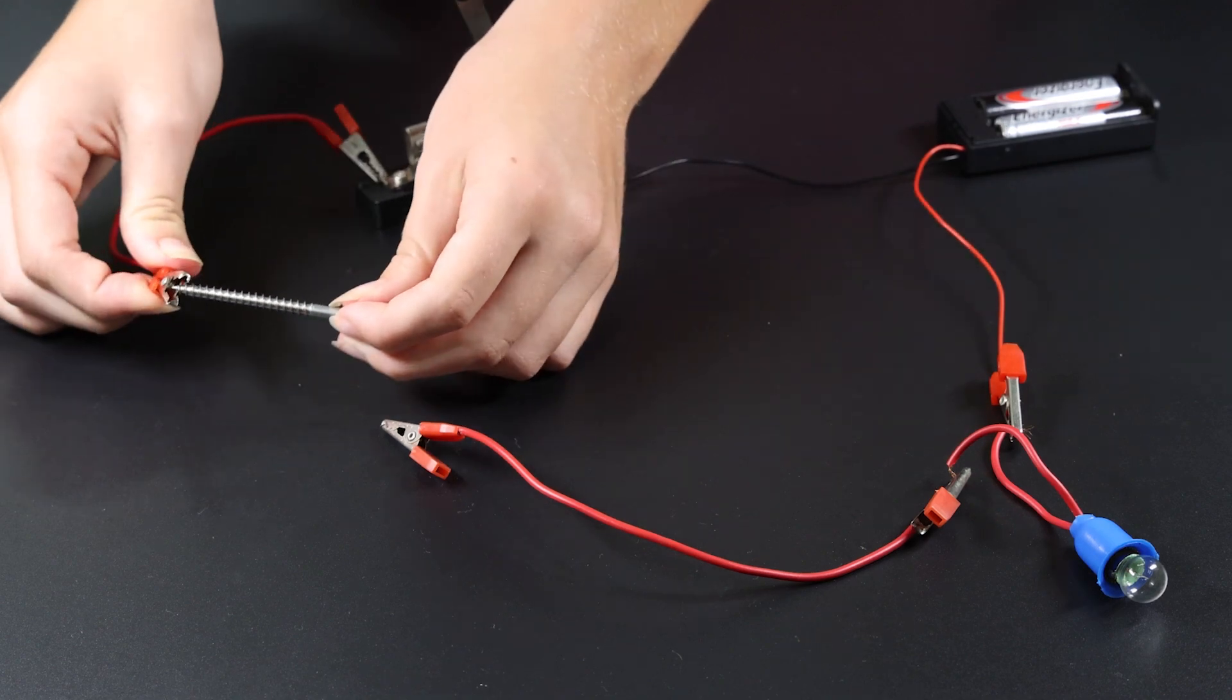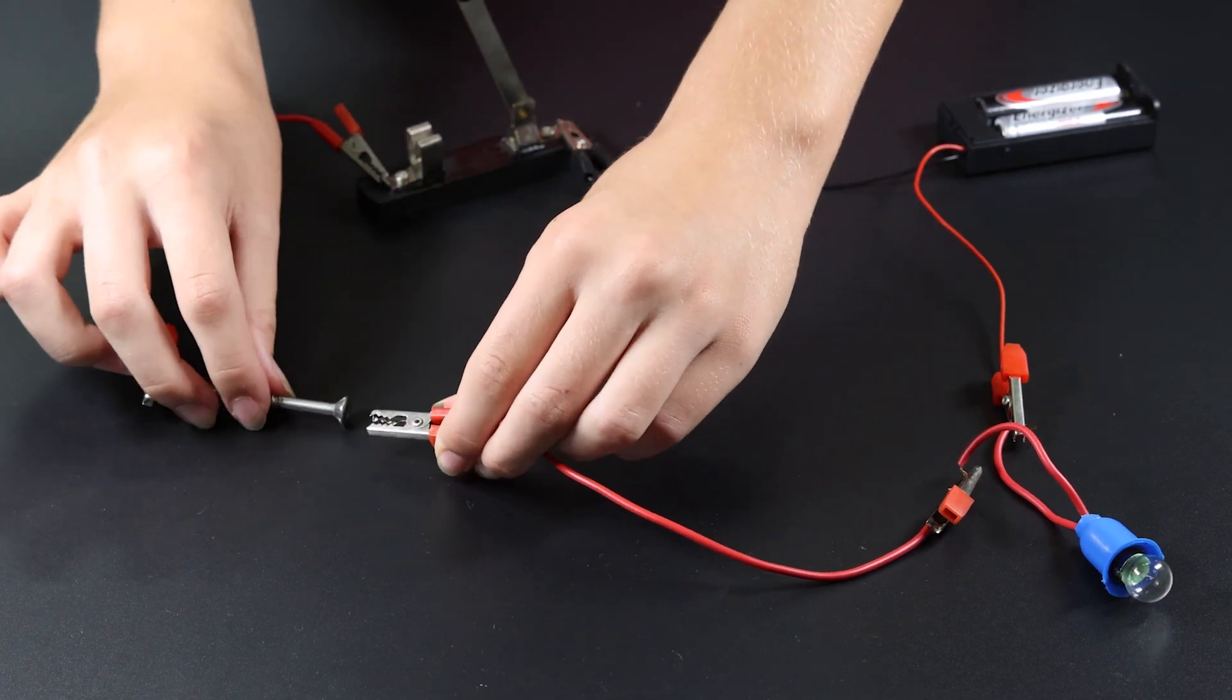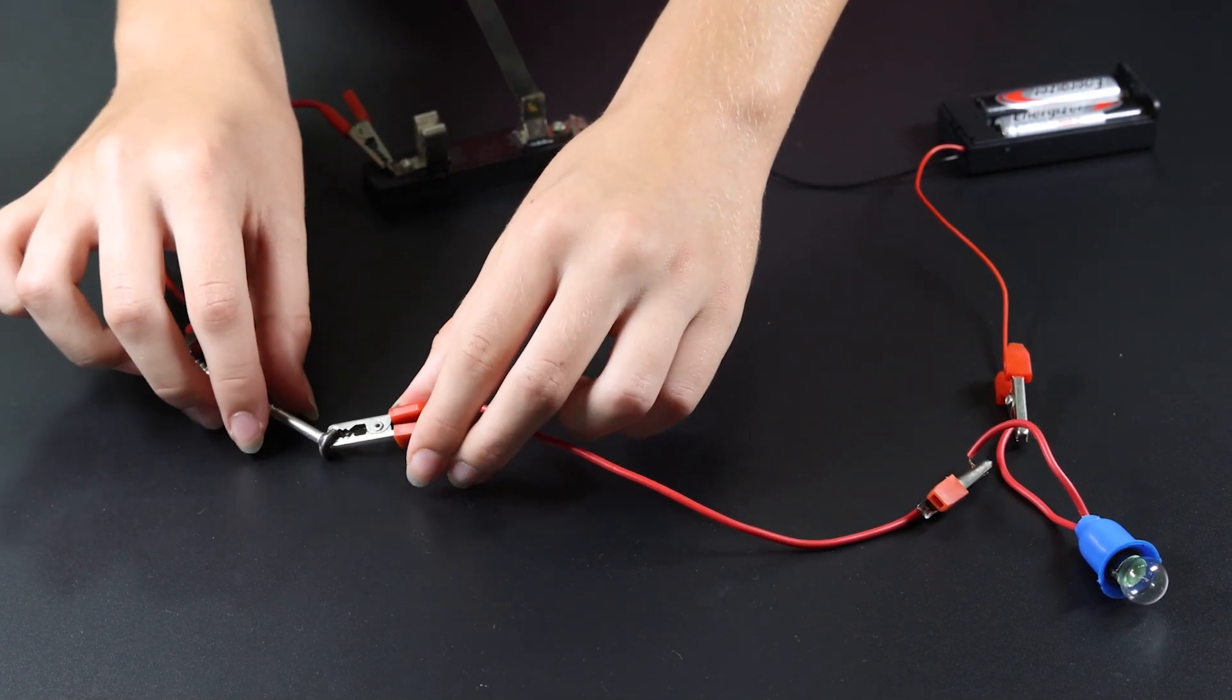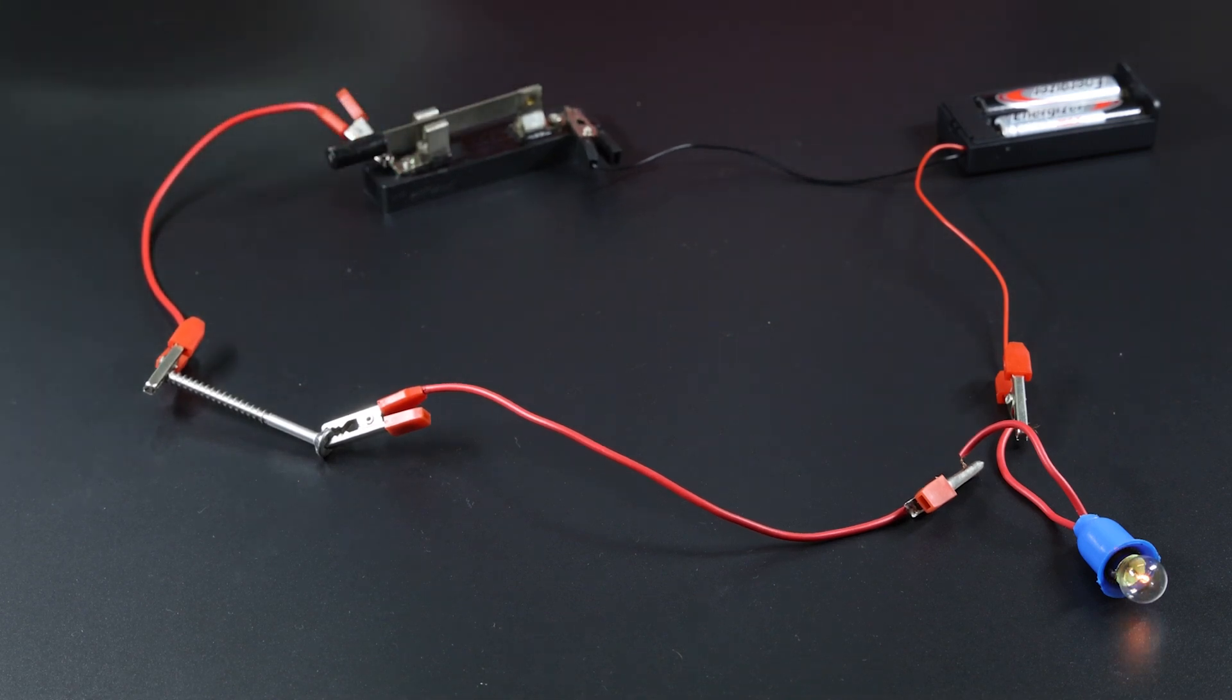Connect a metal screw and close the switch. And the bulb lights up. The metal screw is an electrical conductor.